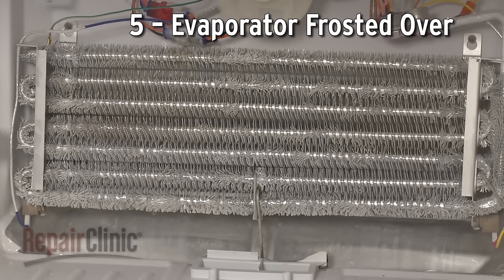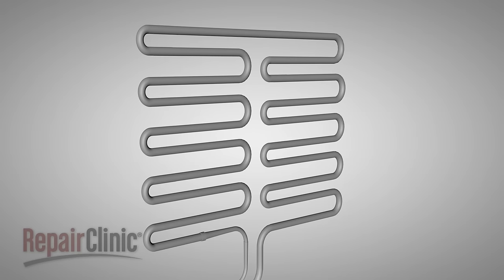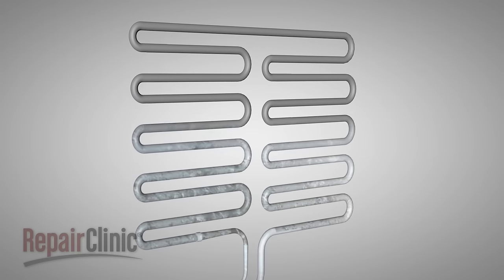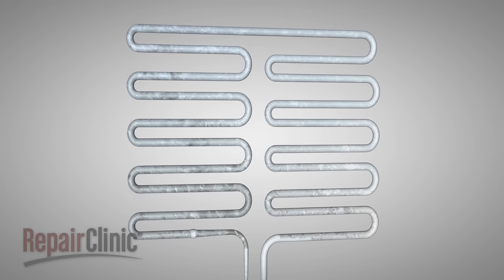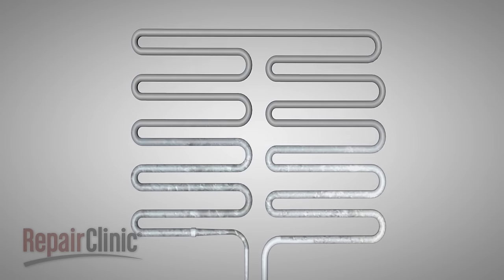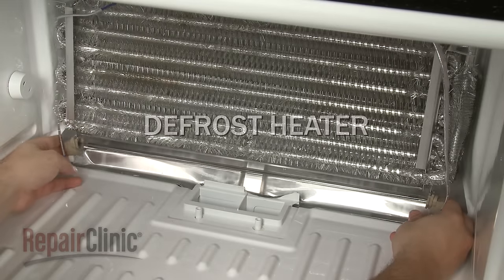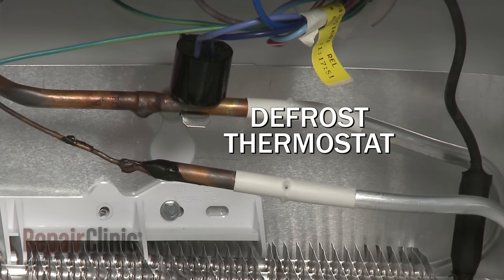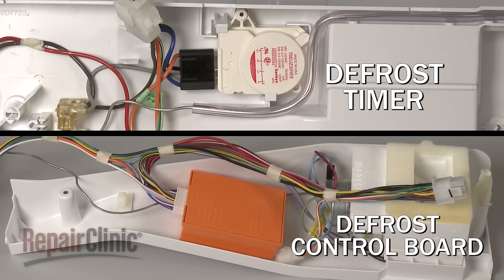The evaporator coils collect frost as the air passes over them. Since frost buildup can cause airflow problems, the coils require periodic defrosting. Older models needed to be defrosted manually, but most of today's models use an automatic defrost system, consisting of a defrost heater, a defrost thermostat, and a defrost control. Depending on your model, the control may be a defrost timer or a defrost control board.